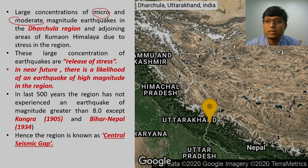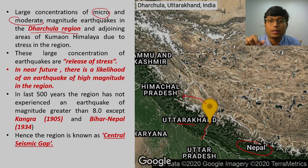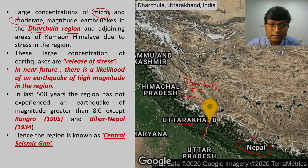Let us locate the Dharchula region. This is Uttarakhand, this is Nepal, and this is the Uttarakhand-Nepal border or Indian-Nepal border. The yellow mark indicates the place called Dharchula. Another important location nearby is Lipu Lekh Pass.